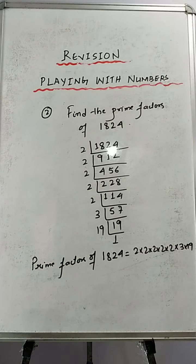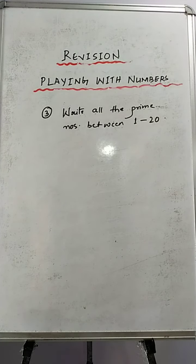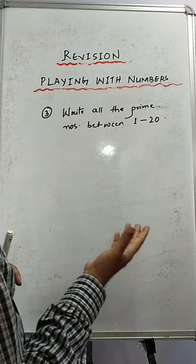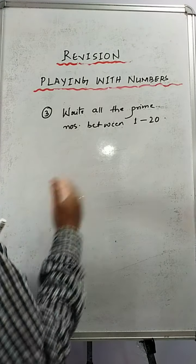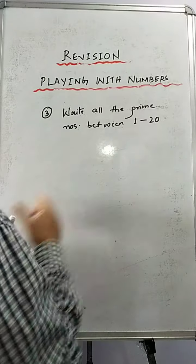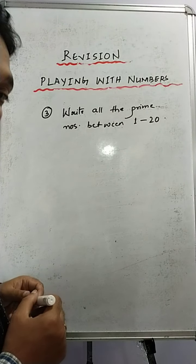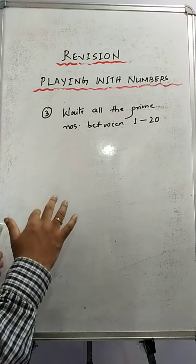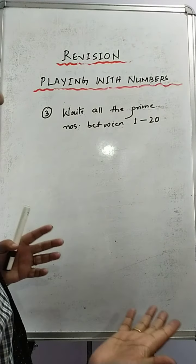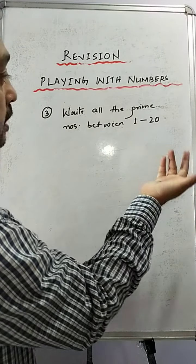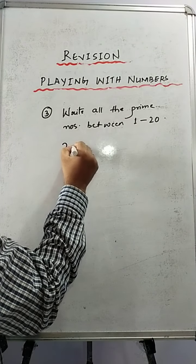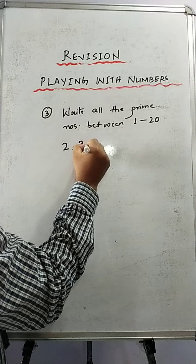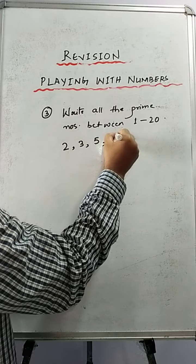Now let's move on to sum number 3. Write all the prime numbers between 1 to 20 — these are very important, very short questions. So we know that prime numbers are the numbers which are only divisible by 1 or by itself. So we have to see which numbers are only divisible by 1 and by itself. The first number is 2, then 3, then 5, then 7.